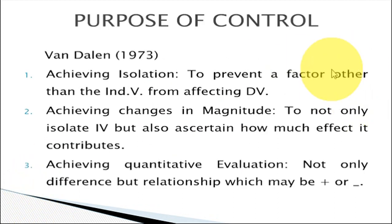Before we go into detail about the ways we can control or put a check on the sources of error, let us see some of the purposes. Why do we use control? As per Van Delen in 1973, control or the check on sources of errors is done to achieve isolation — to have an exact, firm relationship between the independent variable and the dependent variable.